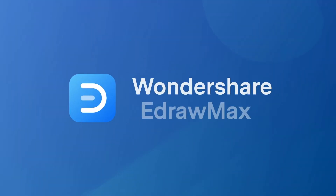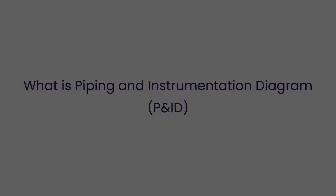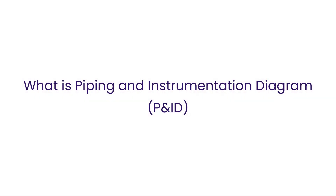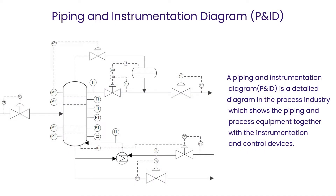Hello all, welcome to eDrawMax. Let's begin with understanding of piping and instrumentation diagram. A piping and instrumentation diagram is a detailed diagram in the process industry, which shows the piping and process equipment together with the instrumentation and control devices.